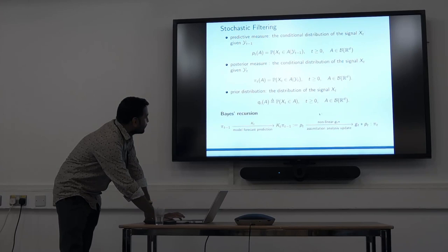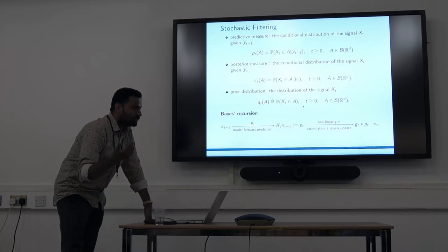I'll jump directly to the Bayes recursion. Suppose we have the posterior measure at time t minus 1, then we can use a forward model with the transition kernel to get the predictive measure at t. Then we can use data assimilation using a nonlinear log likelihood function to go from predictive measure to posterior measure. We can use this loop to go from t to t plus 1 and so on.